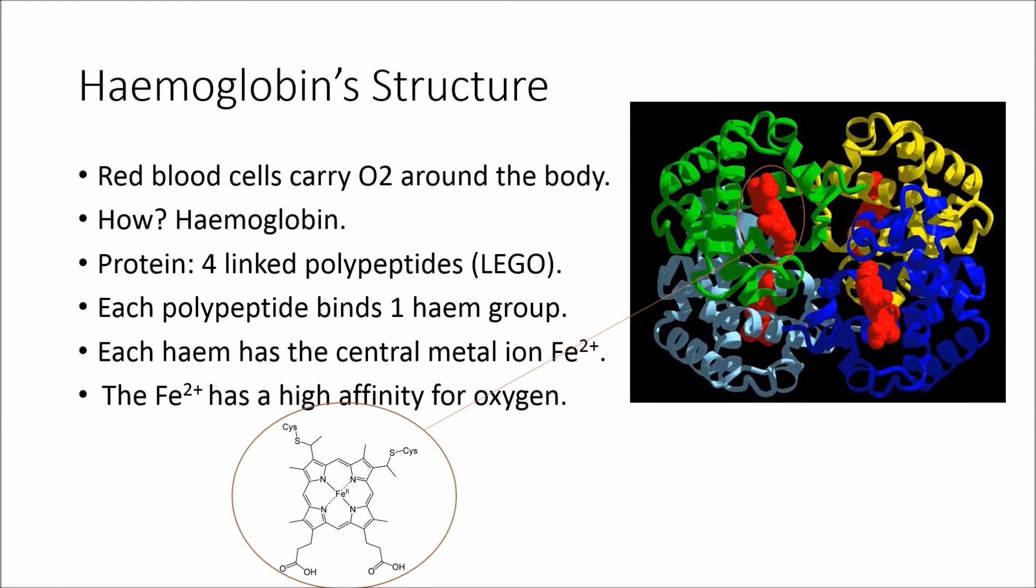So first of all, we're going to start off with haemoglobin structure. As you probably know, red blood cells are the cells that your body contains that are responsible for the transportation of oxygen, that diatomic molecule, around your body. This is needed for things like respiration to provide your cells with the energy they need to function properly. So how does it actually do this? You've probably heard of this molecule before, but it's haemoglobin.